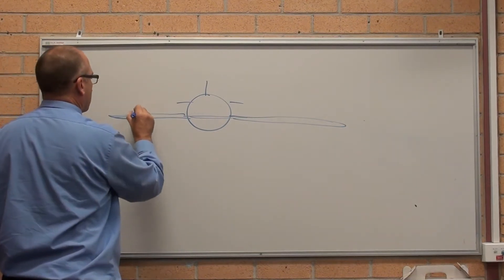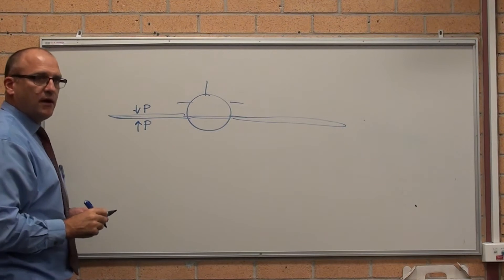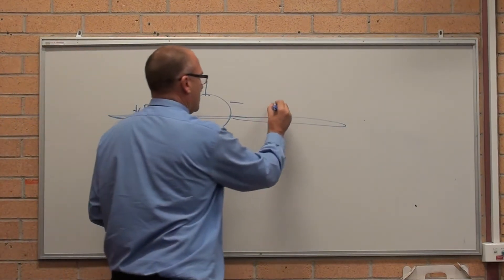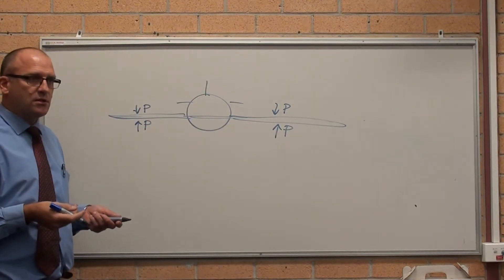Now, we've established up there, there's low pressure. Here, there's high pressure. Correct? Yeah. There, there's low pressure. Here, there's high pressure. Symbols? Yeah.